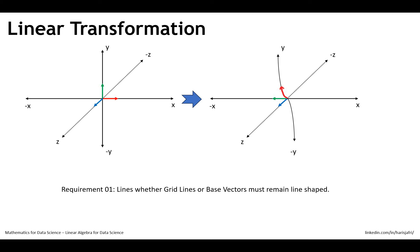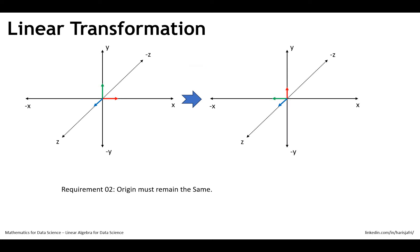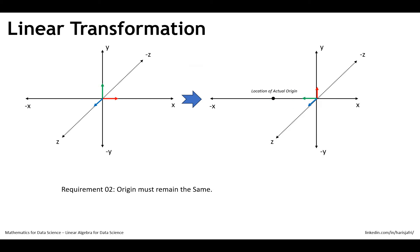So that is not acceptable for a linear transformation — that one is indeed wrong. Requirement number two: the origin must remain the same. What we did earlier was correct; we never changed the origin, so that one is right. However, if you shift the origin from its actual location to somewhere else, that would be wrong.